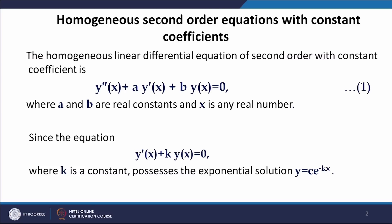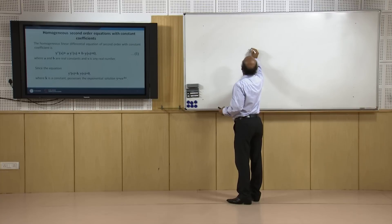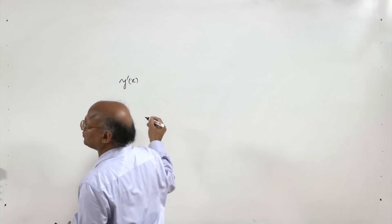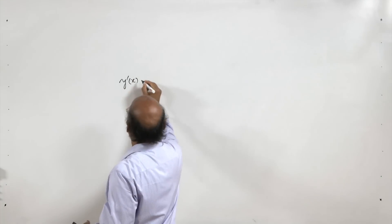We shall find the solution of this second order homogeneous linear differential equation with the help of the solution of the first order linear differential equation with constant coefficients. Consider y'(x) + k·y(x) = 0; we know that it possesses an exponential solution.